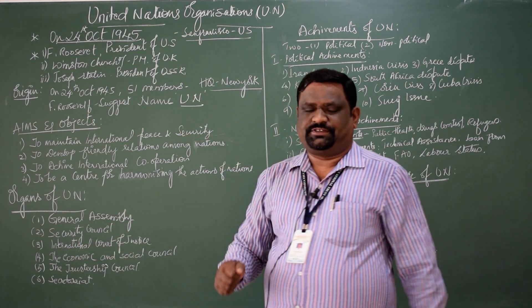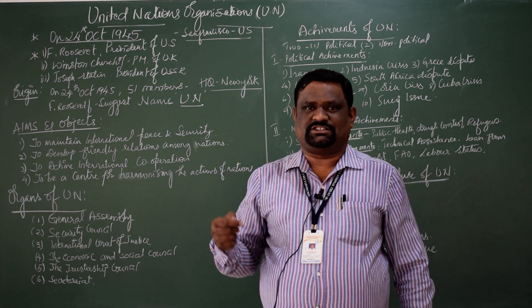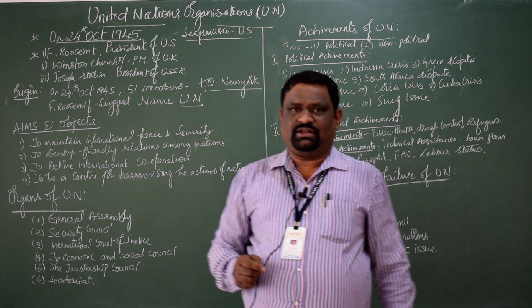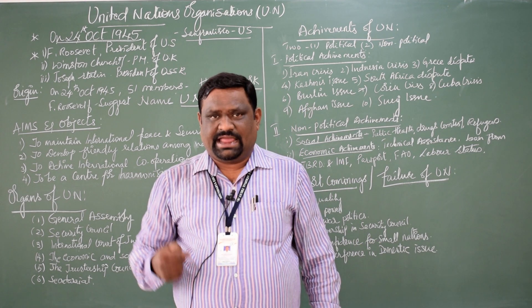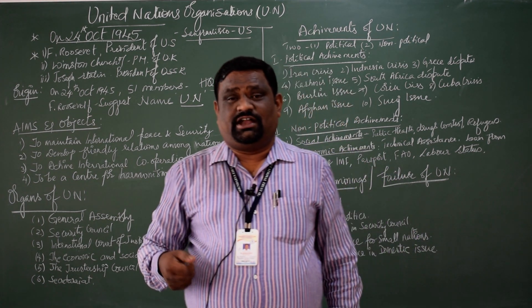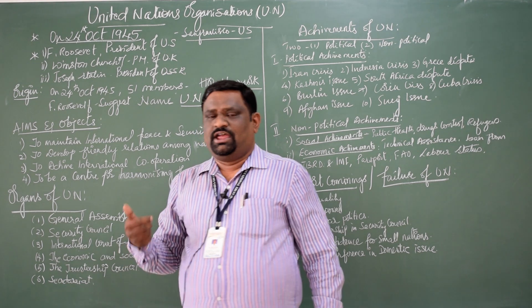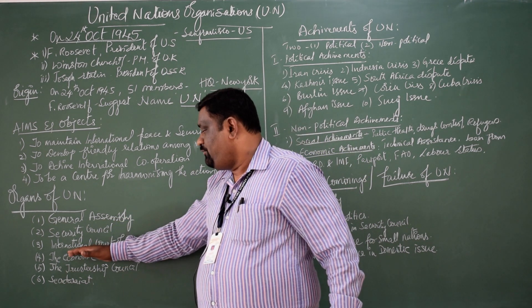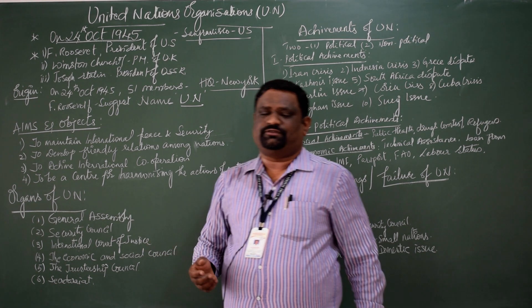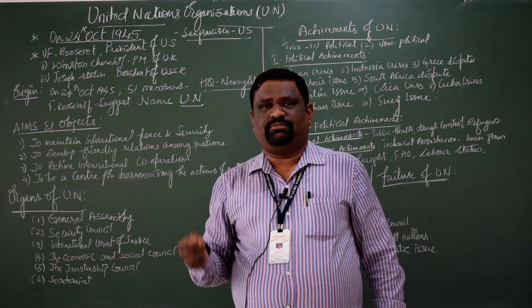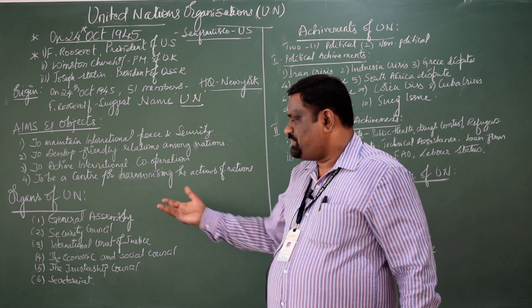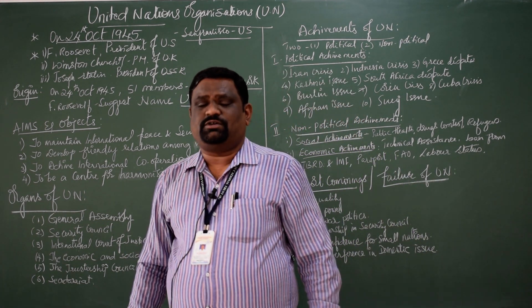Coming to the International Court of Justice: the headquarters of the International Court of Justice is located at The Hague. There will be 15 judges, and those 15 members are elected for a term of nine years. With the recommendation of the Security Council, the General Assembly nominates them. The job of the International Court of Justice, as the name itself says, is deciding judgments. It also works as an advisory organ for all its agencies — whether it is the General Assembly, the Security Council, or any other organ of the United Nations.